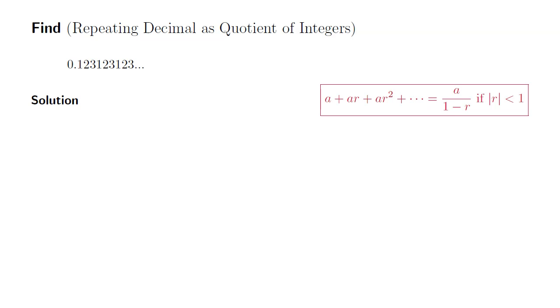Before we get started, I'm going to assume the knowledge of the sum of a geometric series: A plus AR plus AR squared plus and so on is equal to A over 1 minus R, if the absolute value of R is less than 1. So let's get going.